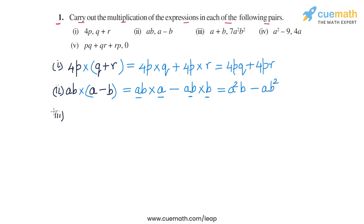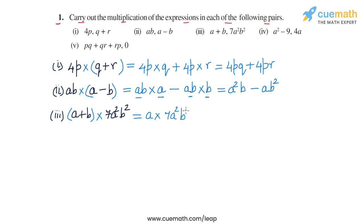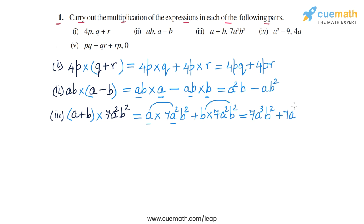In part 3, we have to multiply (a + b) and 7a²b². The first expression is a binomial and the second is a monomial. We can still apply the distributive law, since distribution can happen from either the left or right side. So we get a into 7a²b² plus b into 7a²b². A into 7a²b² gives 7a³b², and b into 7a²b² gives 7a²b³. So the product in part 3 is 7a³b² + 7a²b³.